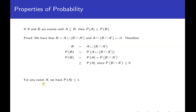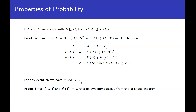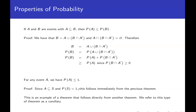This leads to a corollary: for any event A, P(A) ≤ 1. Nothing can have a greater than 100% chance of happening. The proof is easy: since A ⊆ S and P(S) = 1, we just apply the previous theorem with B = S. Corollaries are still theorems — they just have a special name because they follow directly from the preceding result.